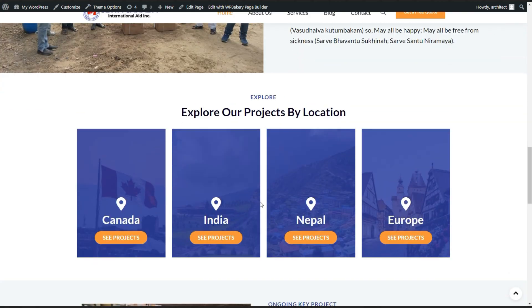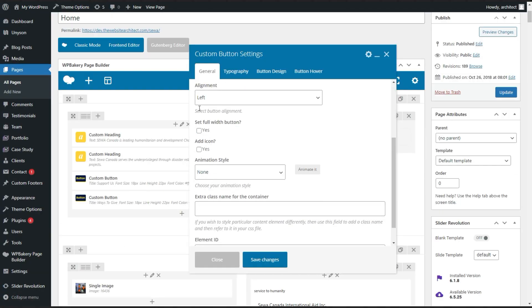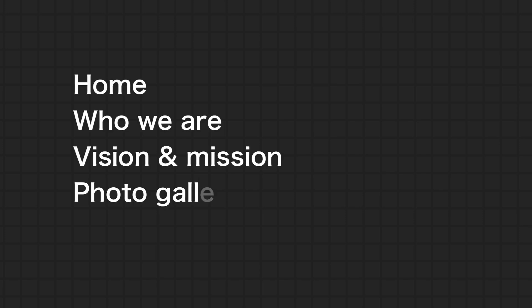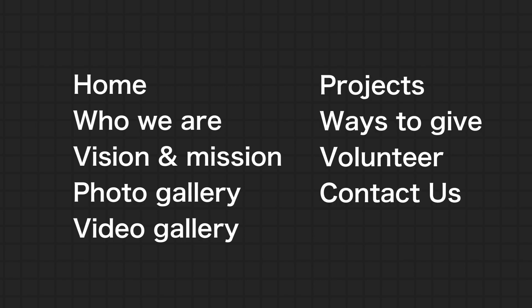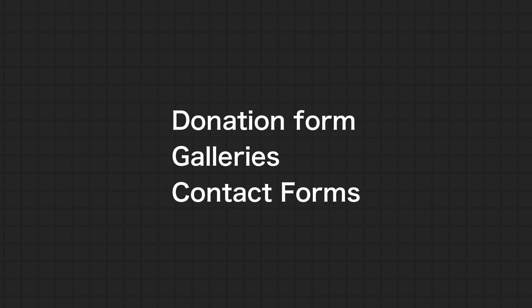Moving forward, let's jump into the plan of the site. I knew it was going to be a nine-page website: Home, Who We Are, Vision and Mission, Photo Gallery, Video Gallery, Projects, Ways to Give, Volunteer, and Contact Us. For custom functionality, it would have a donation form, some galleries, and a couple of contact forms — nothing too big.